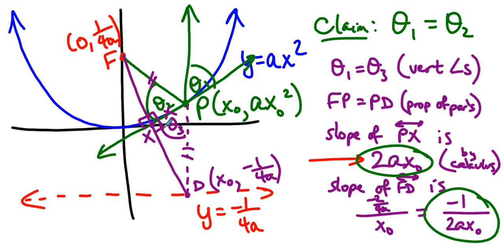Which means, because of corresponding parts, that angle theta 2 is congruent to angle theta 3. But wait a minute, angle theta 3 was congruent to angle theta 1. So angle theta 2 is congruent to angle theta 1, proving the claim.